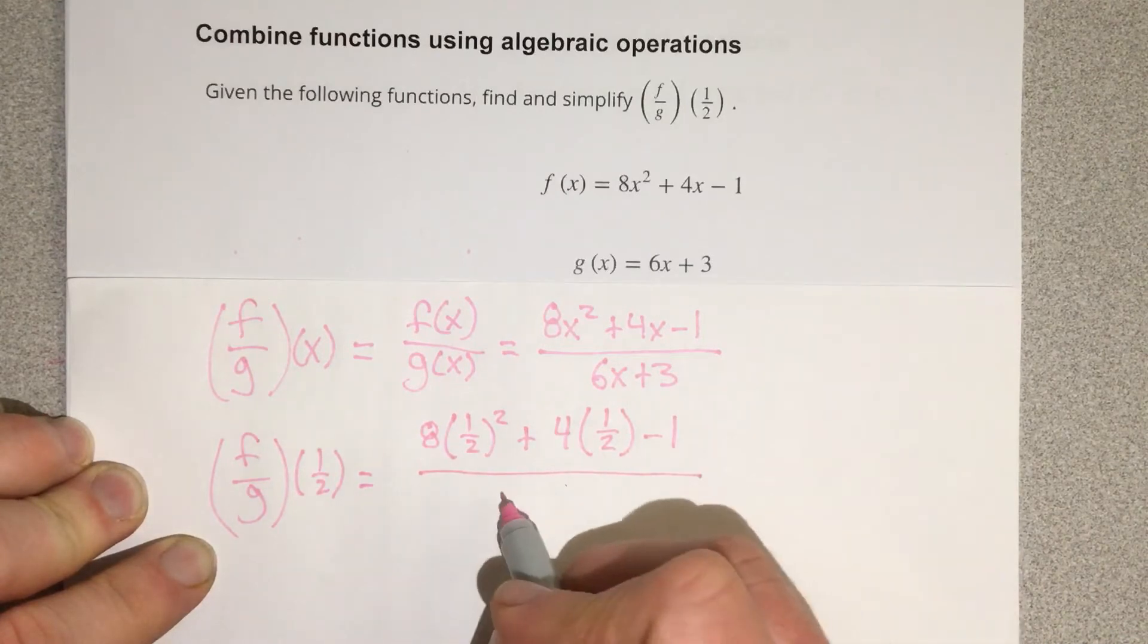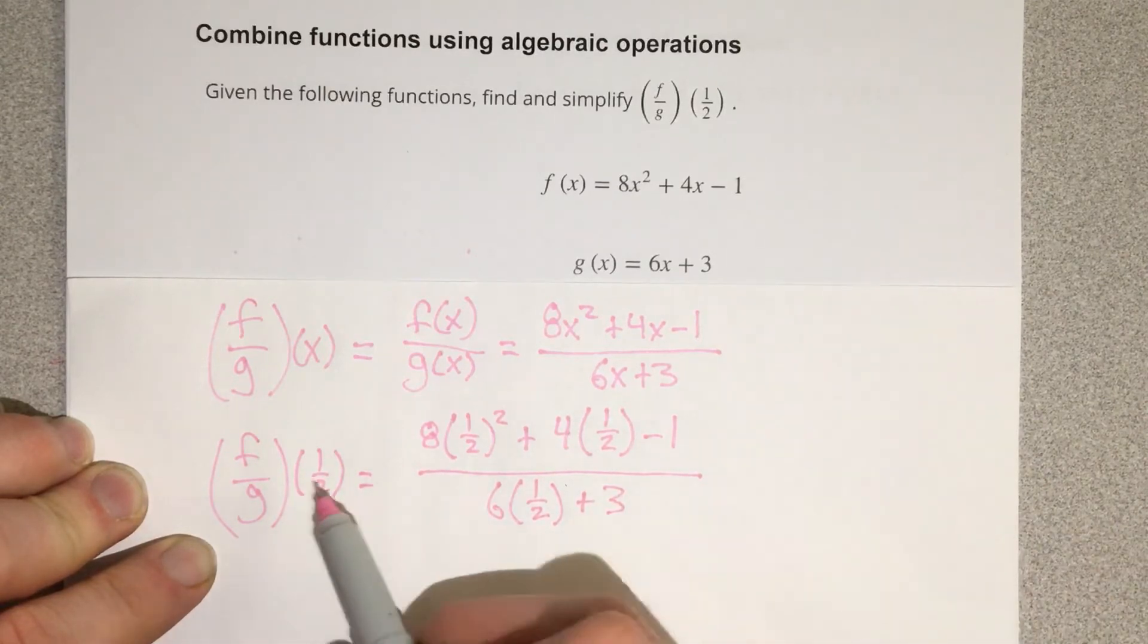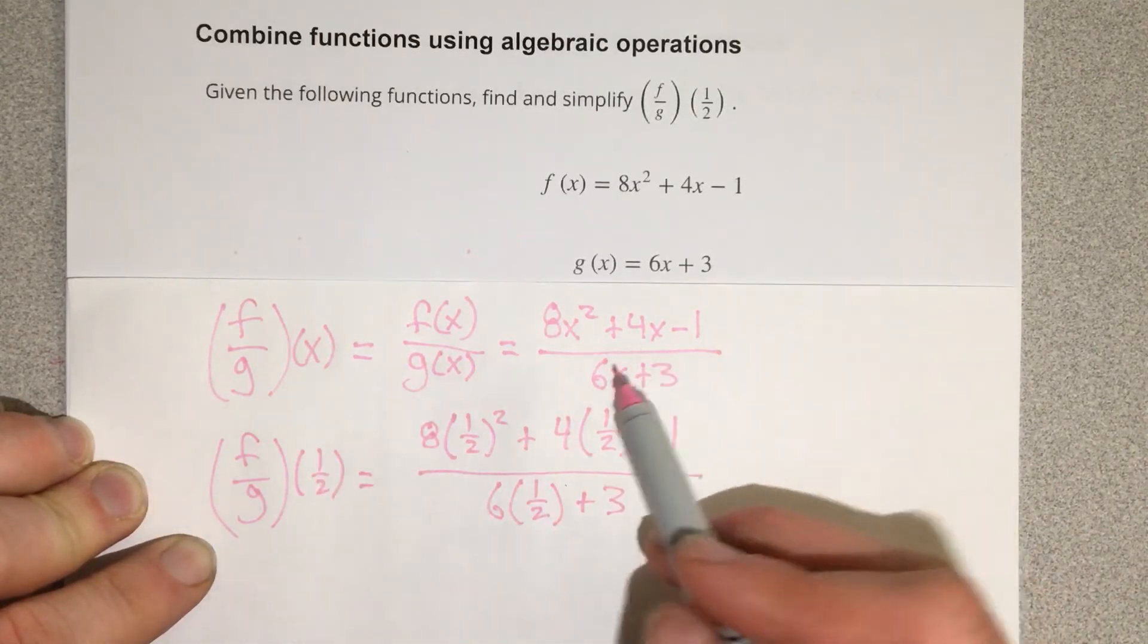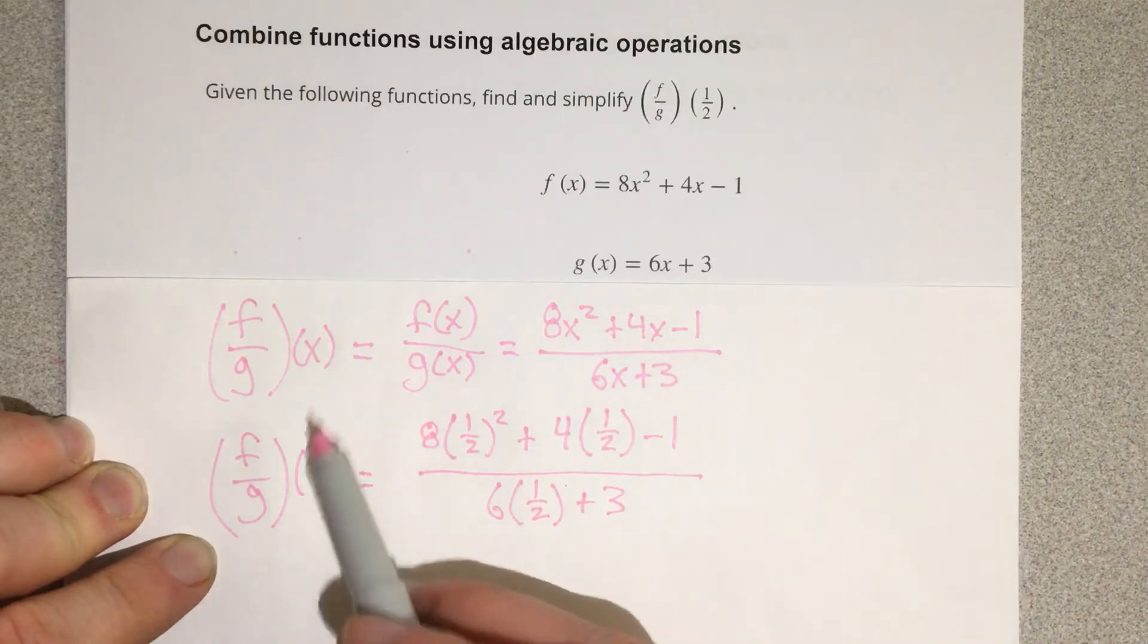And I'm going to divide it by 6 times one-half, and then I'm going to add 3. So all I've done is plugged in the one-half for x in the equation, and I could do this for any number because I have the general equation, which is why I wrote it to begin with.